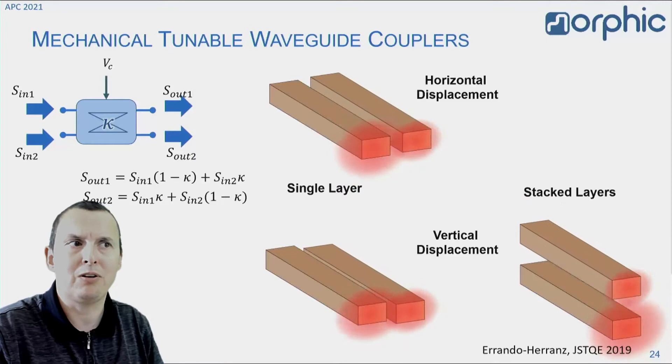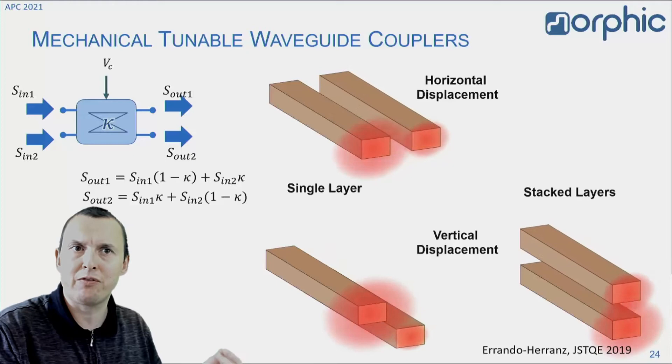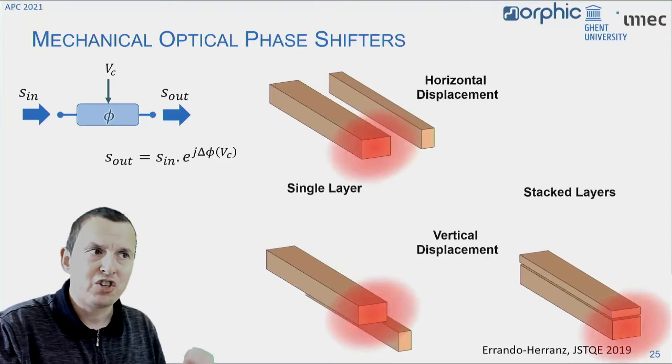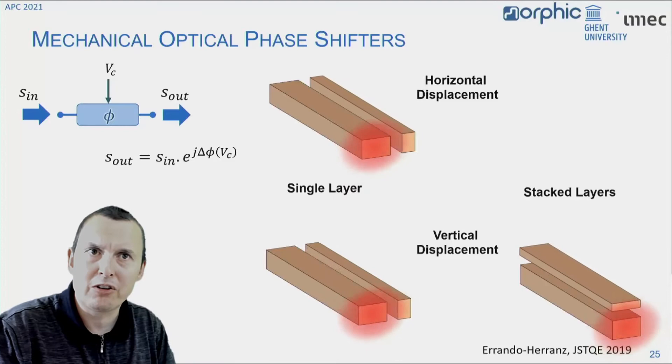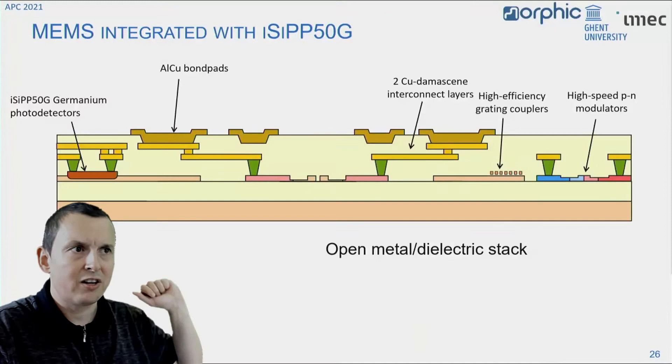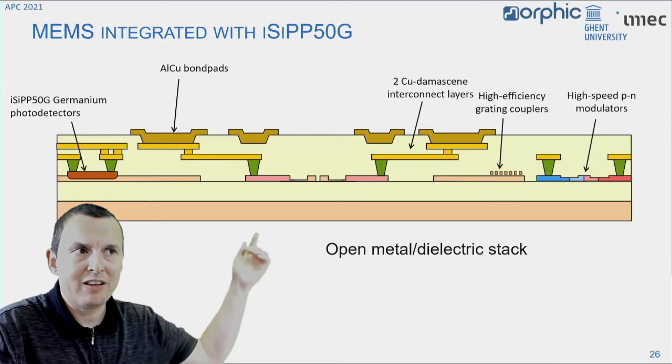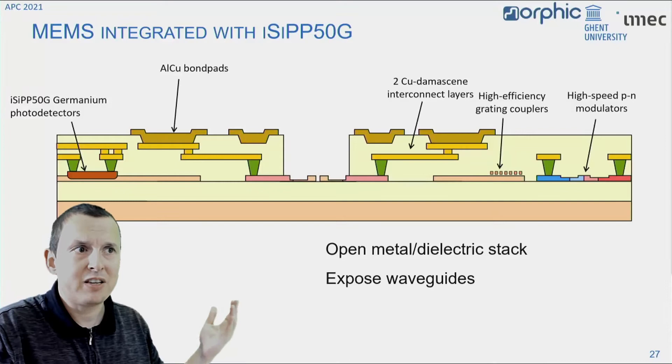Now if you move these two waveguides apart, you change the coupling coefficient. And you can induce that movement either horizontally or vertically, and it even works with waveguides that are stacked on top of one another, where you can vertically move them together or apart. And this concept can easily be extended to implement a phase shifter instead of a tunable coupler. You just have to replace one of the movable waveguides with a thinner beam of silicon that acts as a perturbation to your main waveguide core.